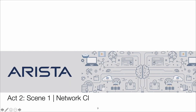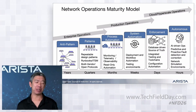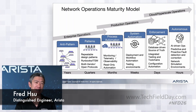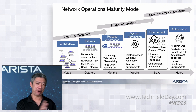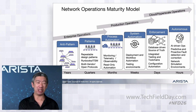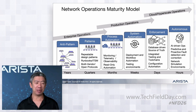I'm going to take you through our network CI pipeline solution that we've been developing. I'll start with a big picture view of the network operations model. As we've seen customers progress in their maturity around network operations, we see them move from the far left, where it takes years to make changes, to the far right, where people can make changes daily or hourly. This is a very long, slow process for many enterprises.